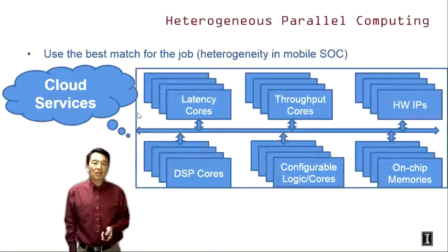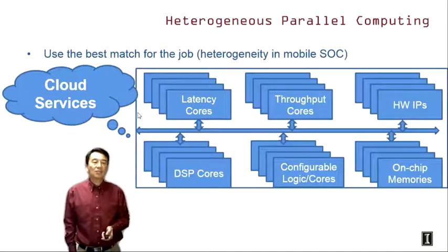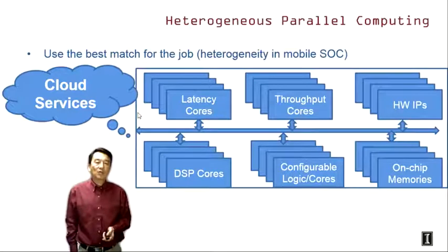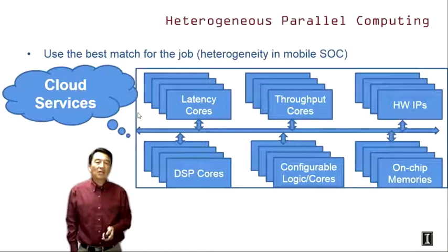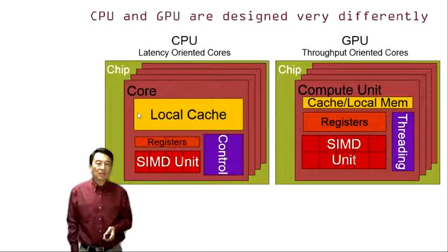The mobile phone domain is not the only domain that has been using heterogeneous parallel computing. In the supercomputing domain, we have very similar trends where the top 500 supercomputers have more than half of their computing power coming from GPU cores today. So we're definitely in a time where heterogeneous parallel computing is becoming increasingly important, and the next few slides will present the fundamental reasons why heterogeneous parallel computing is an important track for applications.